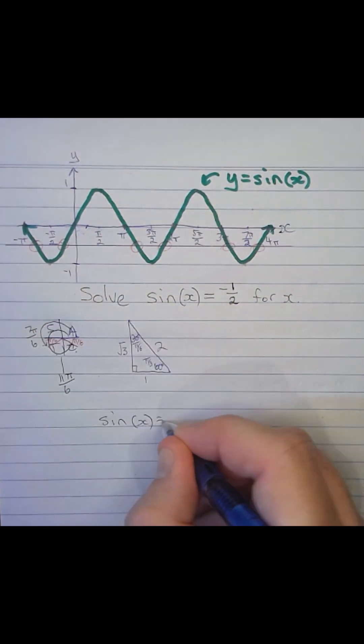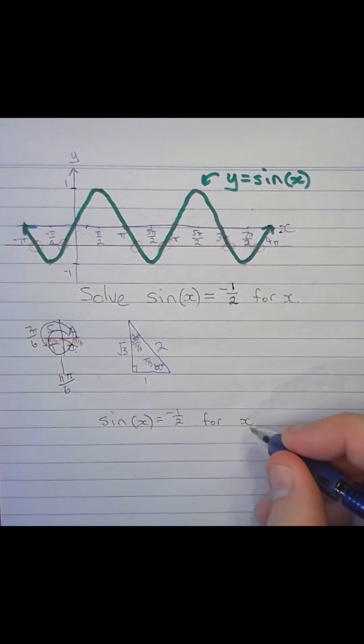So we have a solution that sin(x) = -1/2 for x = 7π/6, and x = 11π/6.